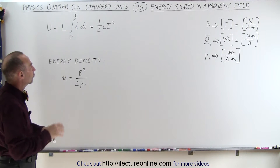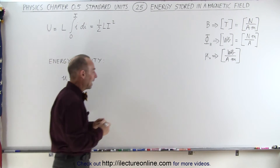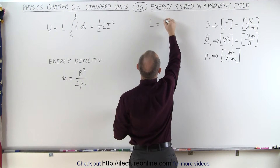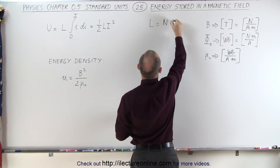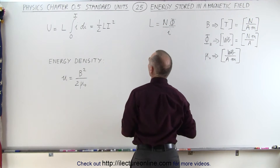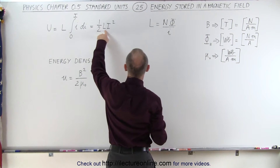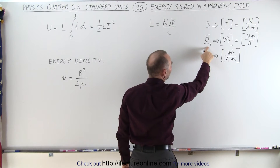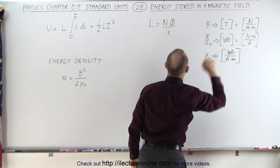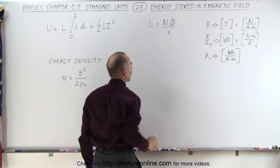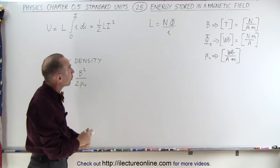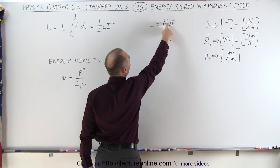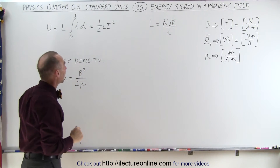First, we need to know the units for self-inductance. The definition of self-inductance L is equal to the number of turns times the flux through the coil divided by the current. The units for magnetic flux are Newton·meters per amp, and the units for current are coulombs per second, or amps. The number of turns is simply a number, so it has no units.